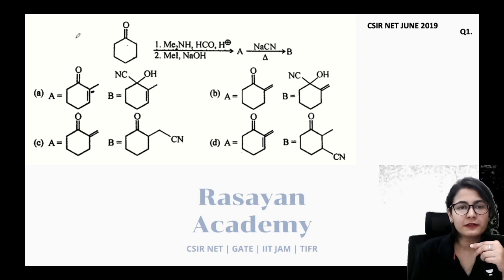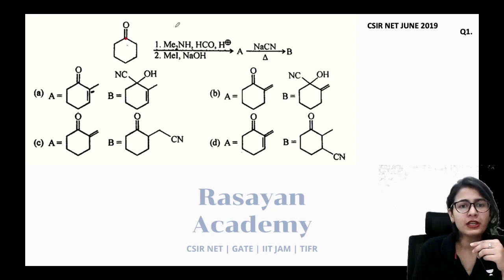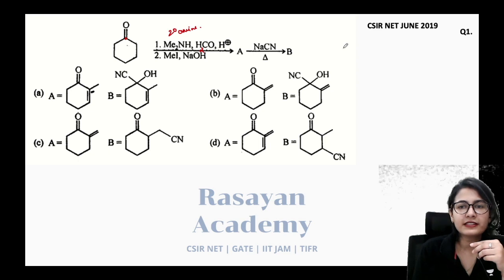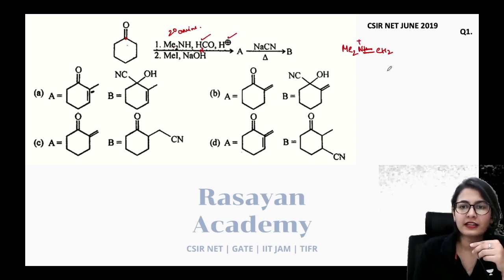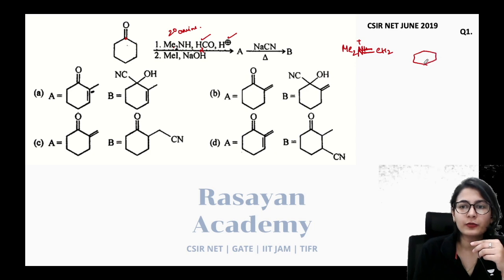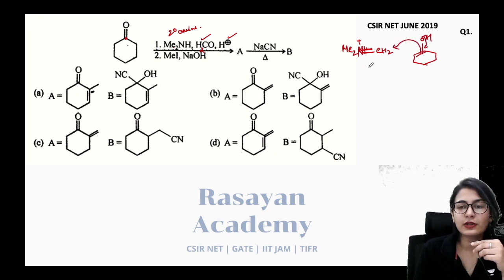First question — very easy. You are given cyclohexanone, a ketone, a secondary amine, and HCHO with H+. In the first step, this combination generates an iminium ion. I'm directly forming the iminium ion from formaldehyde, acid, and secondary amine. When a ketone is present, it tautomerizes to the enol, which attacks the iminium ion to give a Mannich reaction.